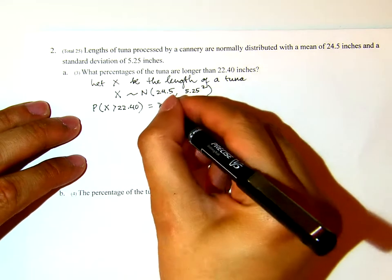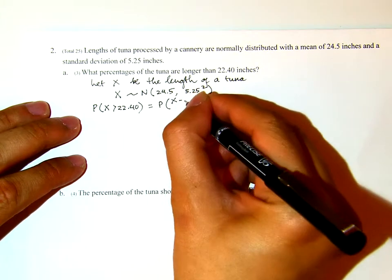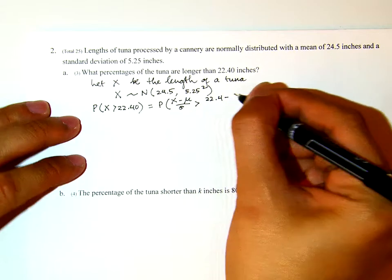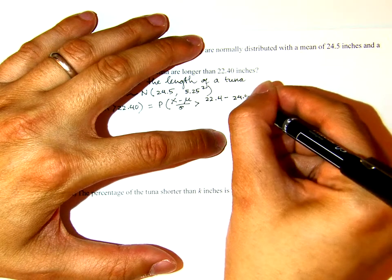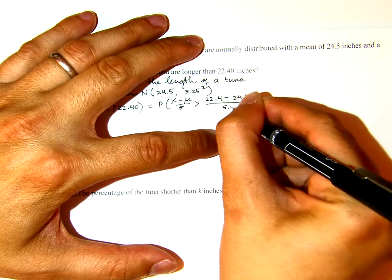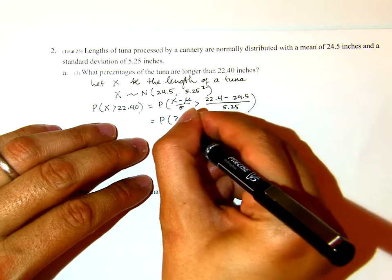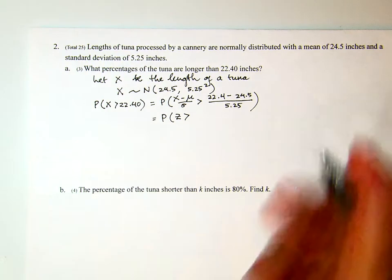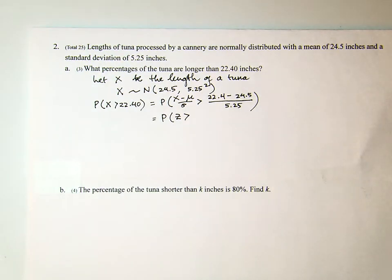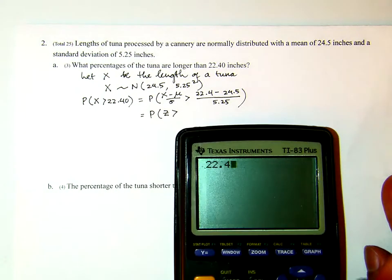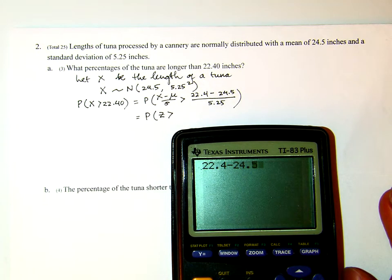First I will standardize: the probability that (x minus mu) over sigma is greater than (22.4 minus 24.5) over 5.25. This becomes the probability that z is greater than — using my calculator — 22.4 minus 24.5 is negative 2.1, divided by 5.25, that's negative 0.4.